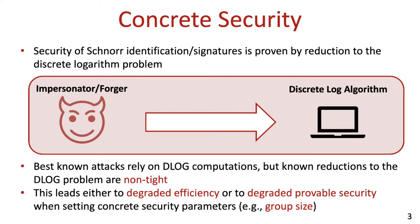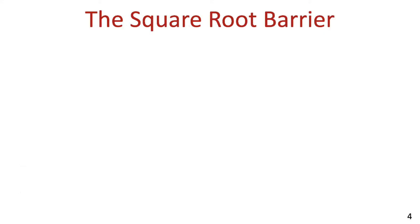This is not just a theoretical issue. When setting the parameters of the group, one has to choose between a larger group size, which means degraded efficiency, or a smaller group size, which means degraded provable security. So let's see exactly what is the loss in the currently known reductions to the D-log problem, and where does it come from?